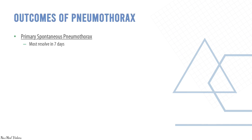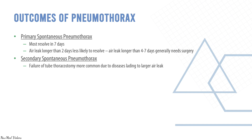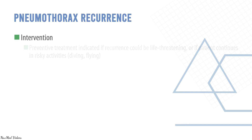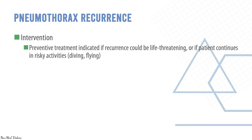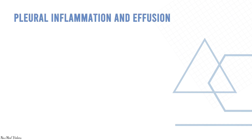Primary spontaneous pneumothorax should resolve in 7 days. An air leak longer than 2 days is less likely to resolve, and one longer than 4–7 days generally requires surgery. Secondary spontaneous pneumothorax failure of tube thoracostomy is more common due to large air leaks from the underlying disease. Recurrence rates are up to 30% for primary and 50% for secondary pneumothorax, increased with younger age, low weight-to-height ratio, and smoking. If recurrence could be life-threatening or the patient continues in risk activities, preventive treatment is indicated, including pleural disease with sclerosing agents, pleural abrasion, or resection of apical bullae.